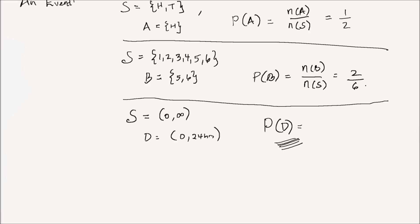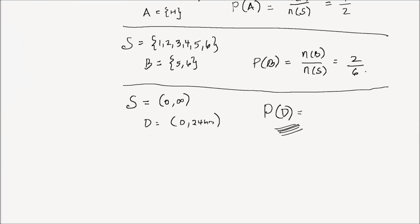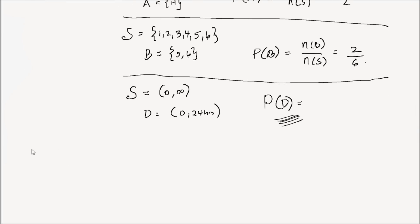Here we have simple events, which are subsets of the sample space. But we can combine these events to form compound events. Compound events are formed by combining simple events using set operations. I'm going to list some of the set operations needed to combine events, and the first one is complementation.